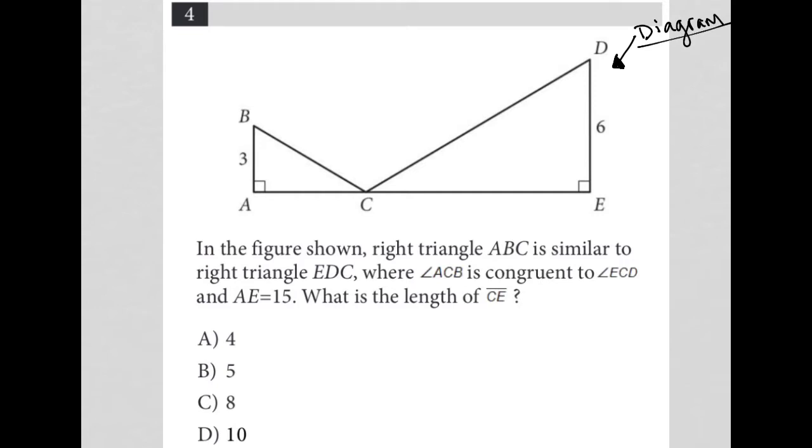We know the side length DE is equal to 6, and we know the side length BA is equal to 3. So I could assume that right triangle DEC is two times larger than right triangle BAC. We'll read that just to make sure, and then we'll also see what other information about this diagram we can fill in.